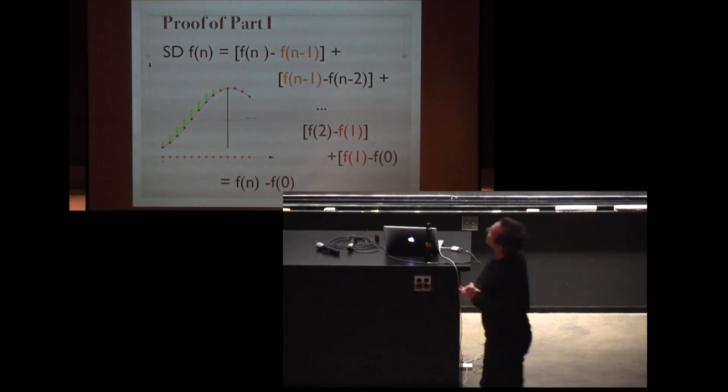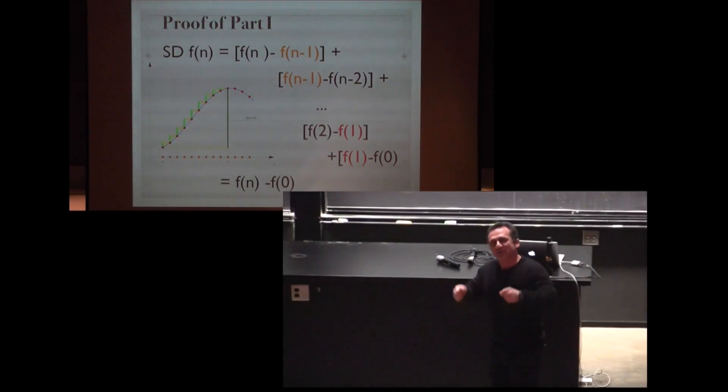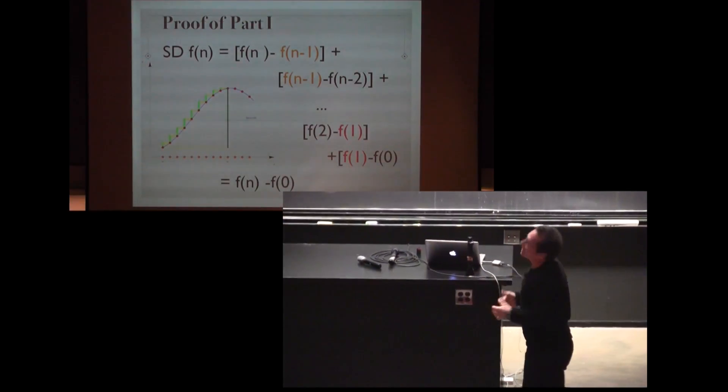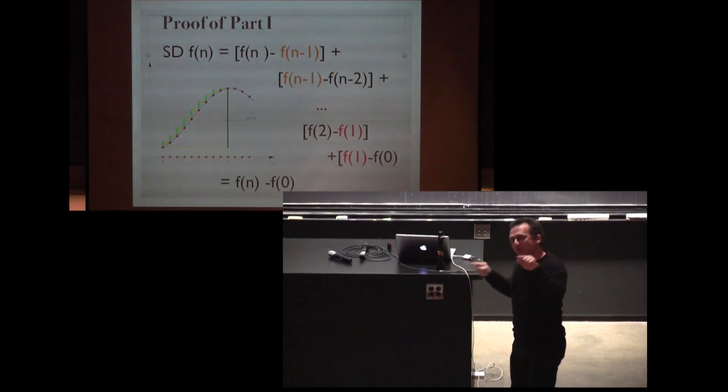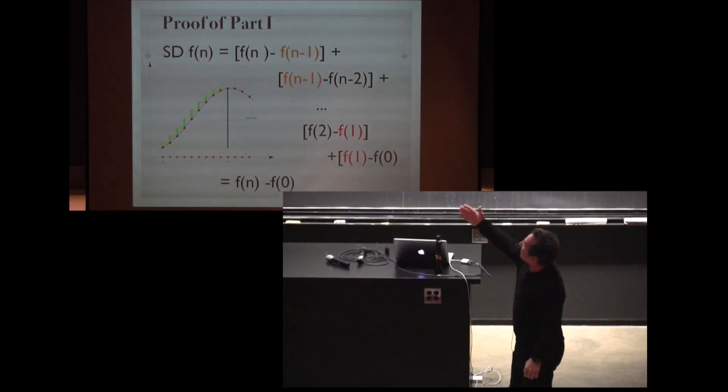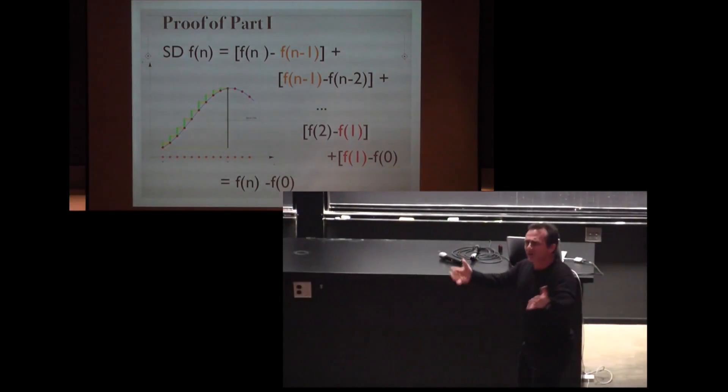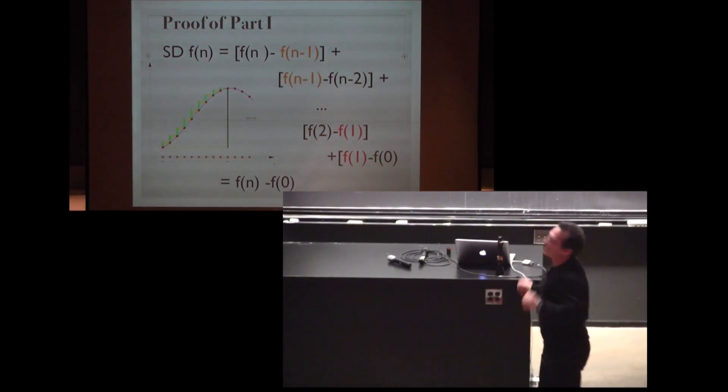And here is the proof of the first result. We take the sum of the differences and you see that the middle terms cancel away. This is a telescopic sum and only the boundary terms survive and we have fn minus f0.